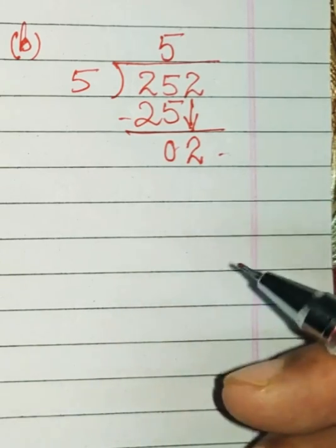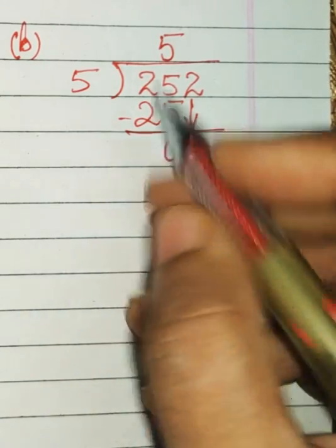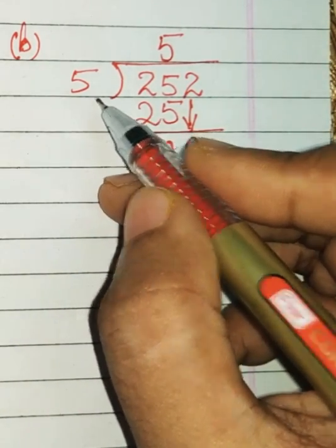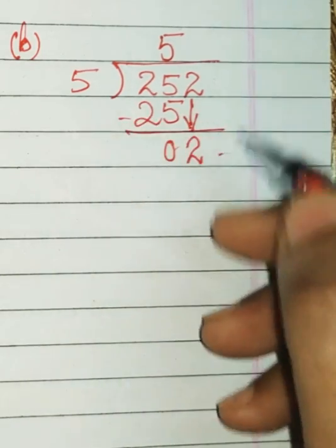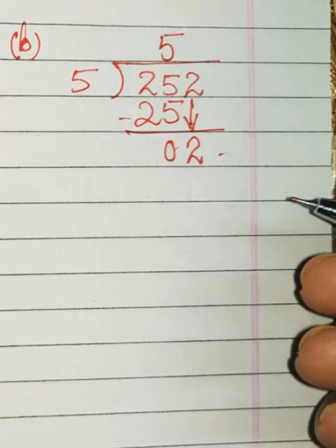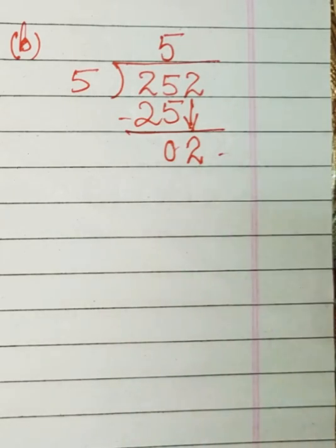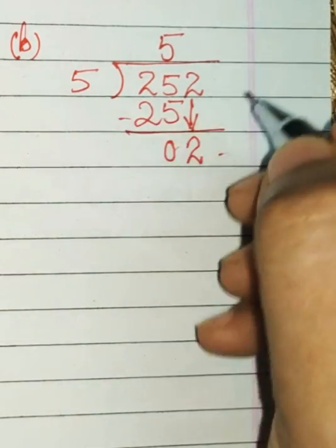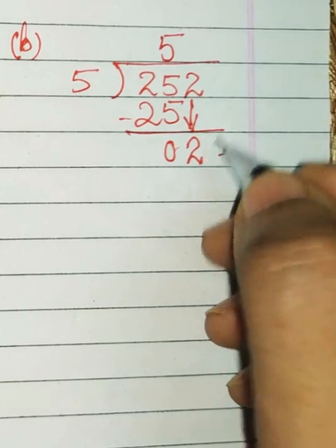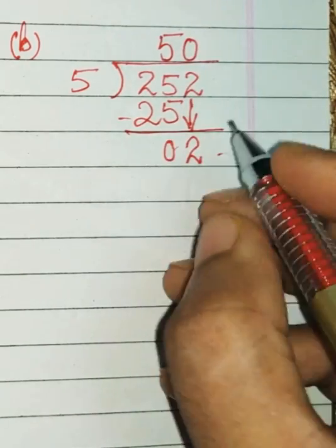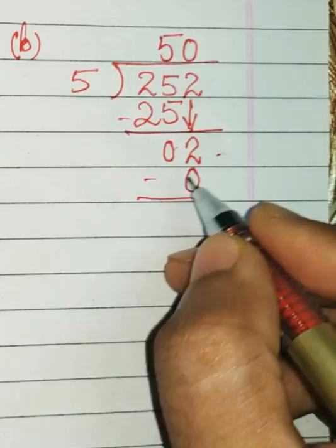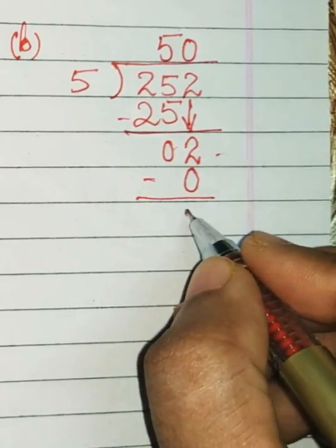So before declaring that this is the remainder, you have to multiply and see whether it can be divided or not. We have to find out the multiplication factor: 5 fives are 25, so it's getting more. So we go down. We will be going for the smaller one: 5 zeros are 0.